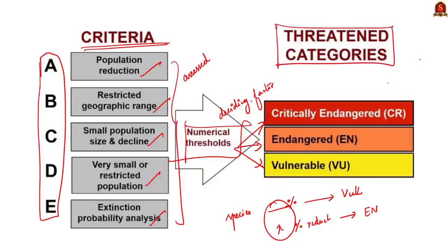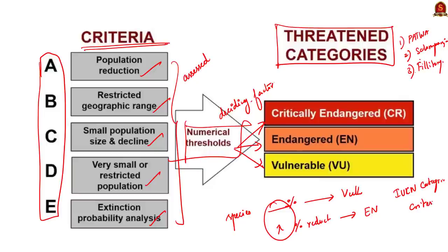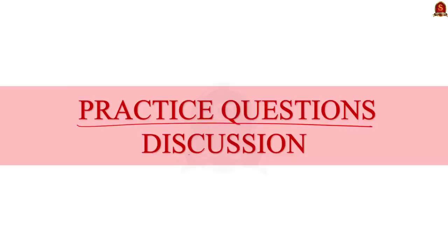We will see about the remaining IUCN categories in coming discussions. In this discussion, we saw about three Himalayan medicinal plant species listed under the IUCN Red List: Mesotrophis pelleta (critically endangered), Fritillaria cirrhosa (vulnerable), and Dactylorhiza hatagirea (endangered). We also saw the IUCN Red List categories and criteria for threatened categories — vulnerable, endangered, and critically endangered.